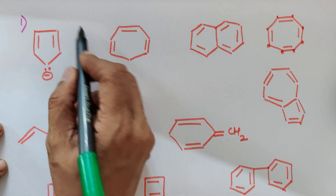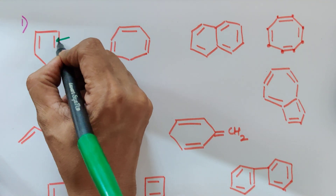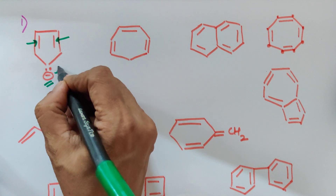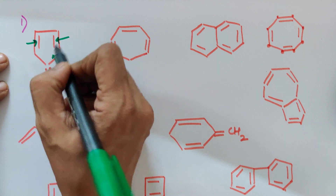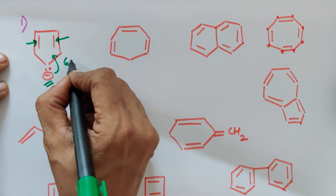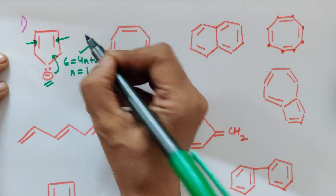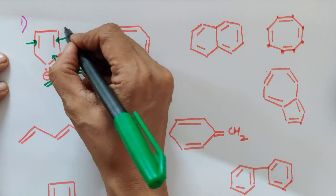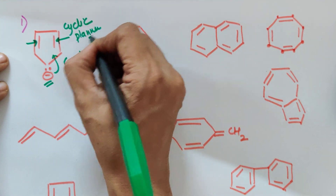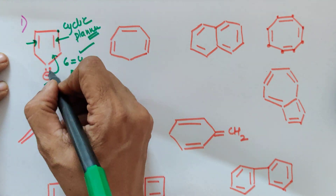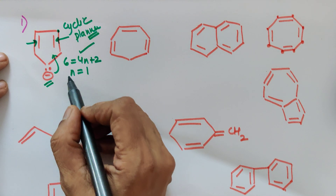Example 1: Look at this compound. It has two pi bonds and a lone pair also involved in resonance. Two pi bonds give 4 electrons, plus a lone pair gives 6 total. So 6 = 4n + 2, meaning n = 1 — Hückel's rule is obeyed. Is it cyclic? Yes. Is it planar? Yes, because all carbons have a double bond and the lone pair is involved in resonance. Therefore this compound is aromatic.